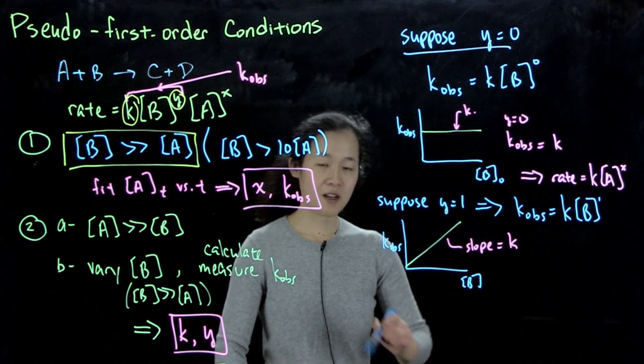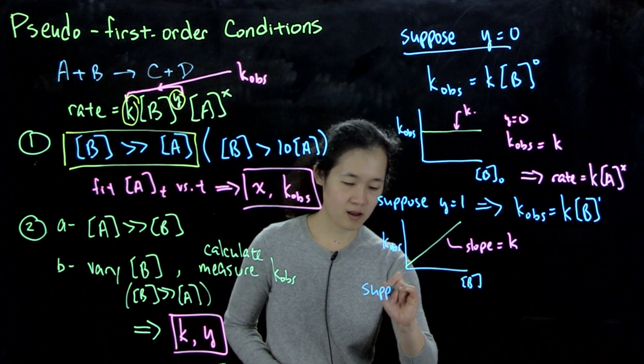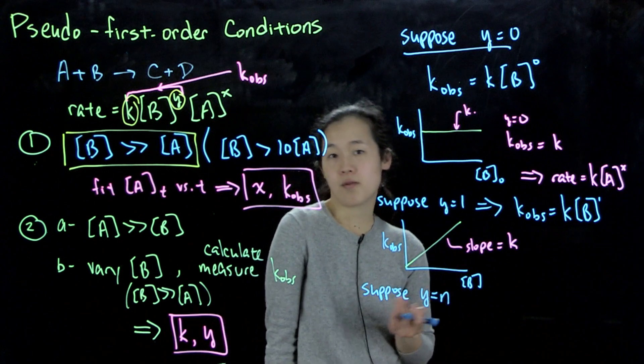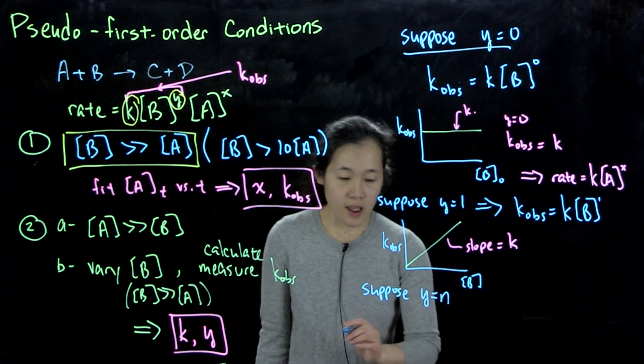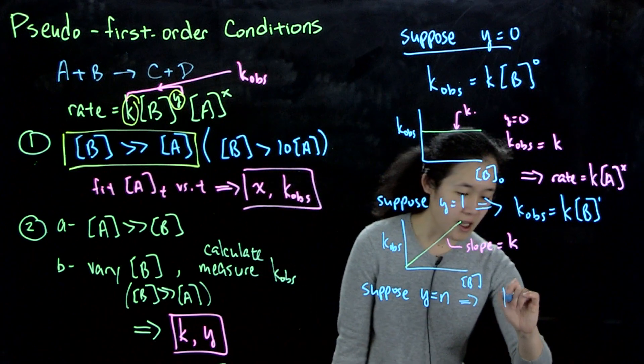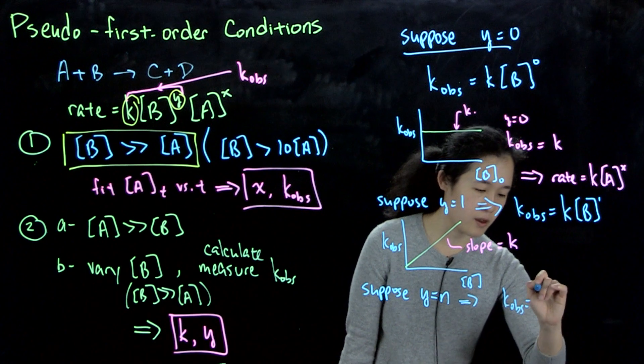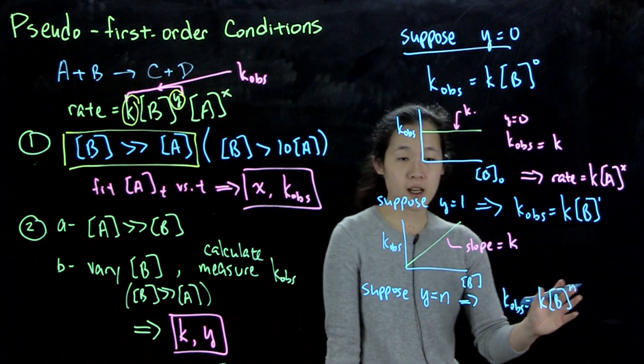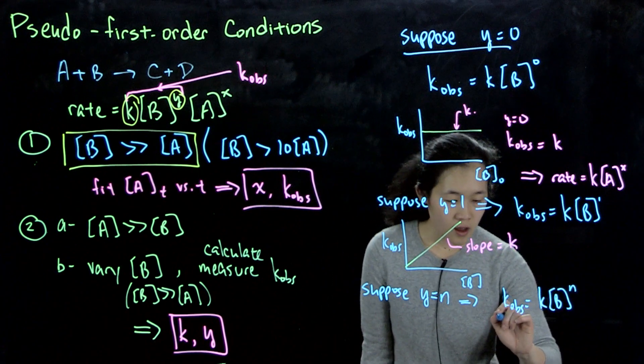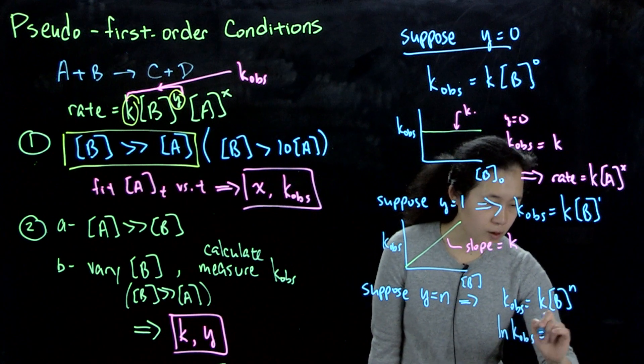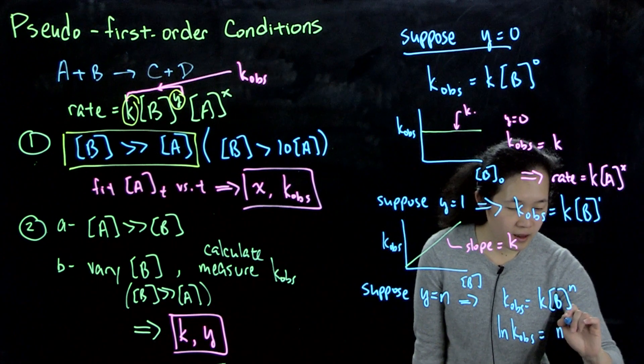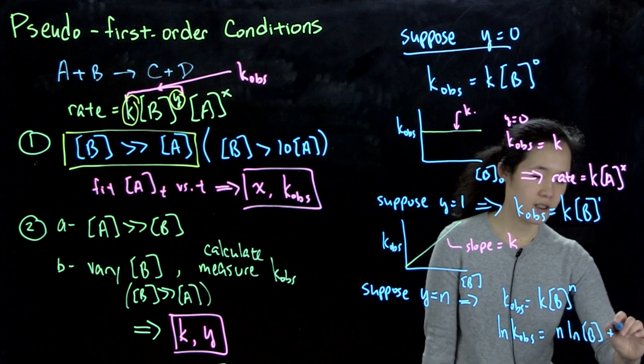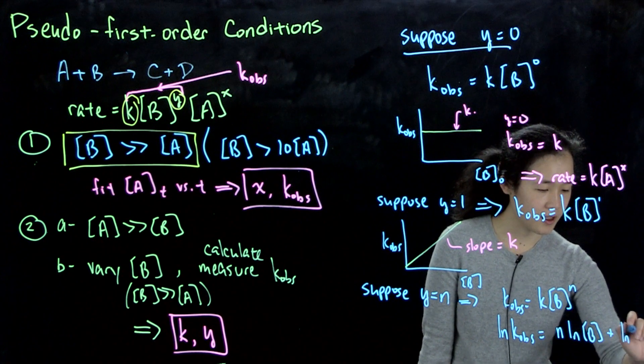OK. And then our last scenario, which will govern all other scenarios, suppose y equals some value n, so it could be second order in b, so n equals 2, third order, et cetera. What this means is that k_ob equals k times b to the n. So then if we actually plot the log of this, so then log of k_ob equals n log of b plus log of k.